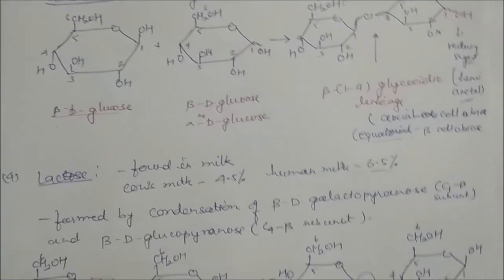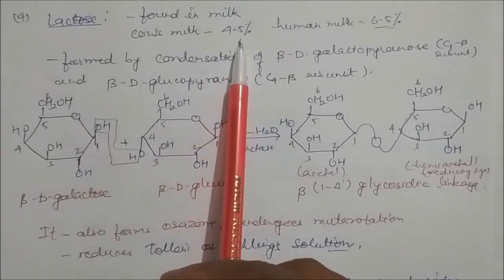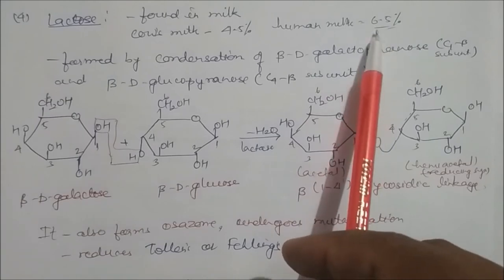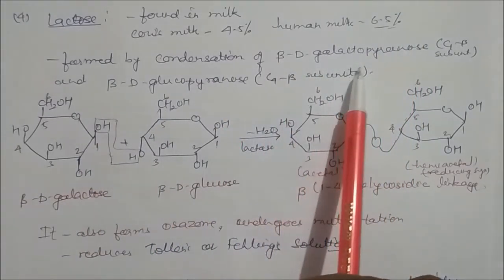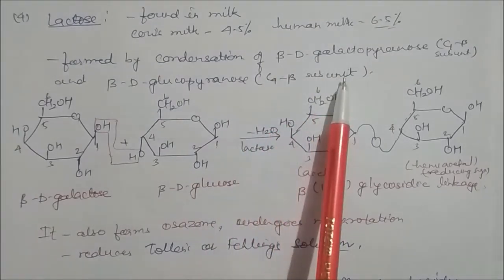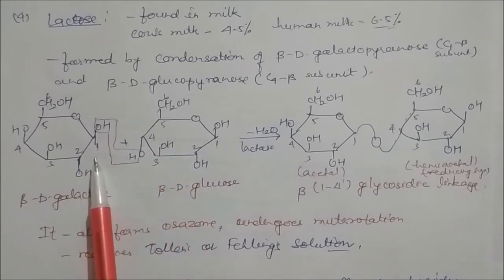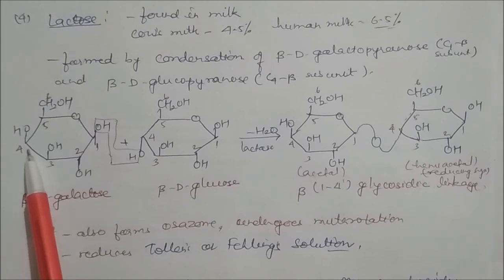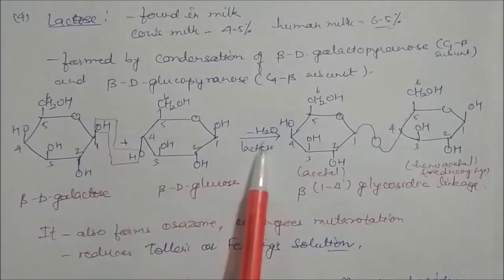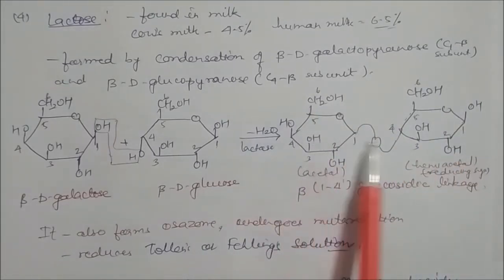Lactose is an important sugar found in milk — 4.5% in cow's milk and 6.5% in human milk. It is formed by condensation of beta-D-galactopyranose (C1 beta subunit) and D-glucopyranose (C4 subunit). Beta-D-galactose has OH up at the anomeric carbon. Galactose is the C4 epimer of glucose — the configuration at C4 is changed. On condensation in the presence of lactase, the glycosidic bond forms.